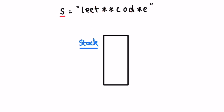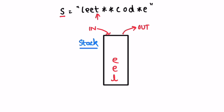Now let's see how the stack will be built. We start iterating from the starting index till the end. The first character is 'l' — we check if it is a star or not. It's not a star, so we add it into the stack. Then 'e' is not a star, add it. Another 'e', add it. Then 't', not a star, add it. Now we are pointing to a star, so pop from the stack which removes 't' — the last entered character. It's a star again, so pop the topmost element.